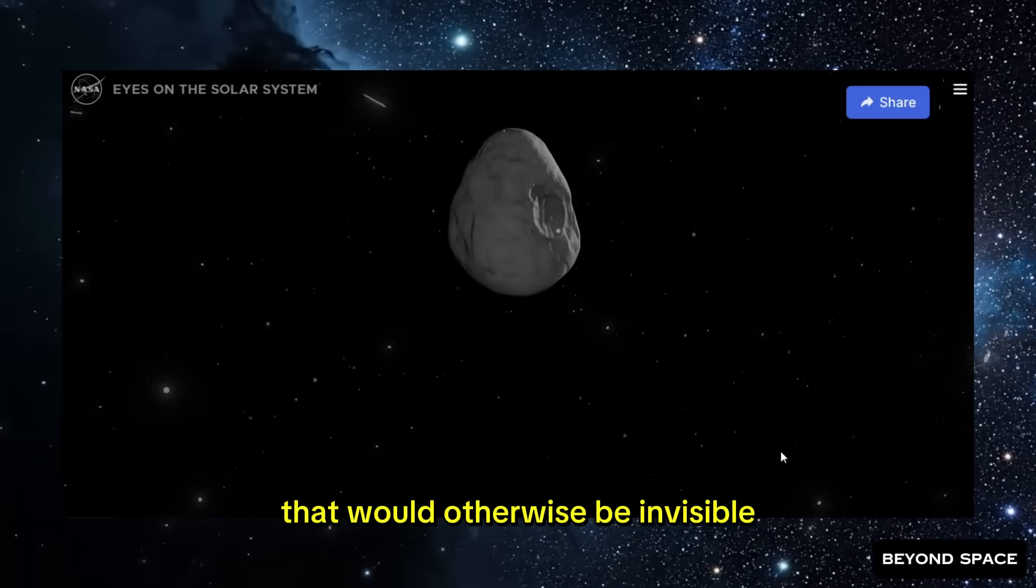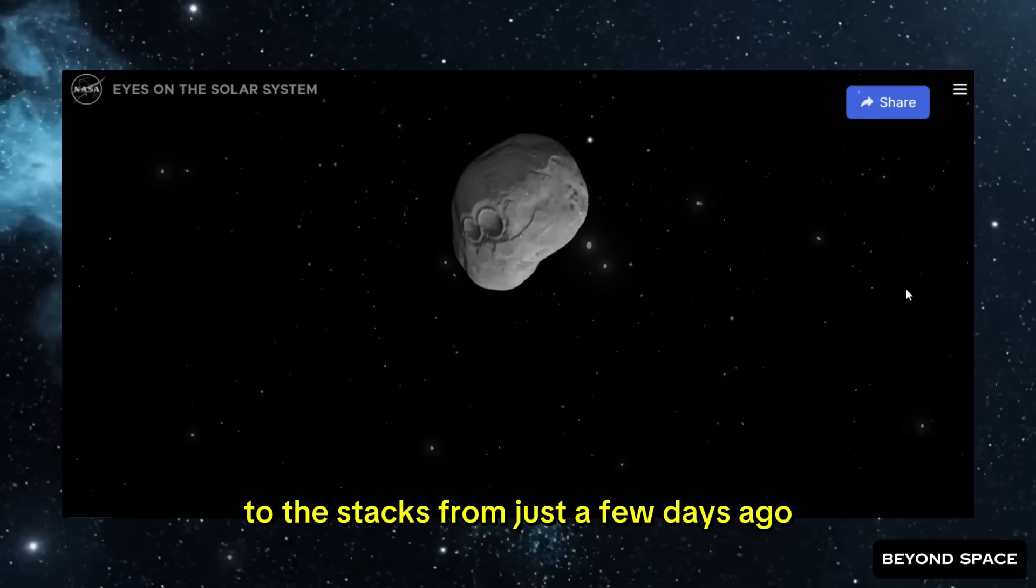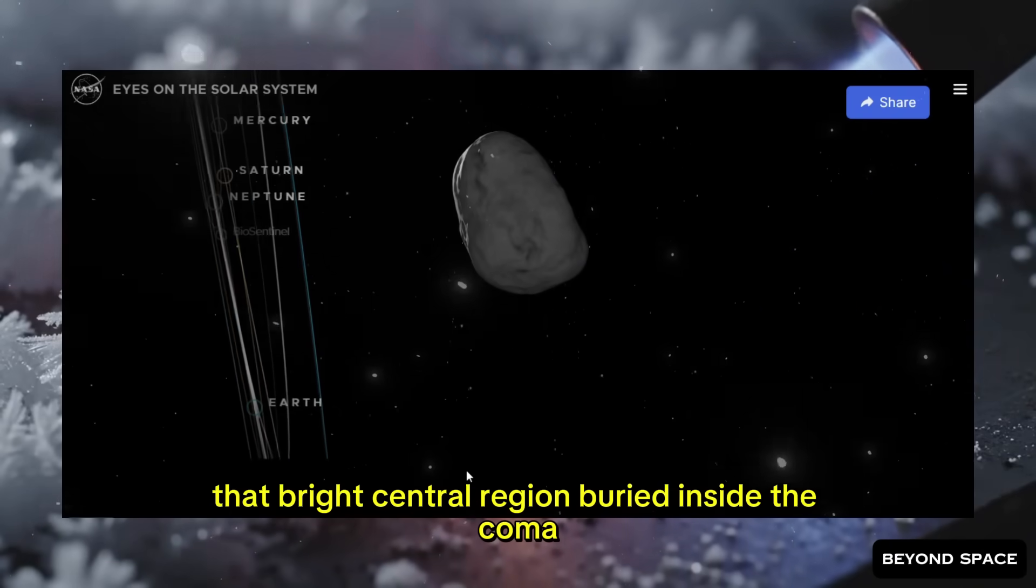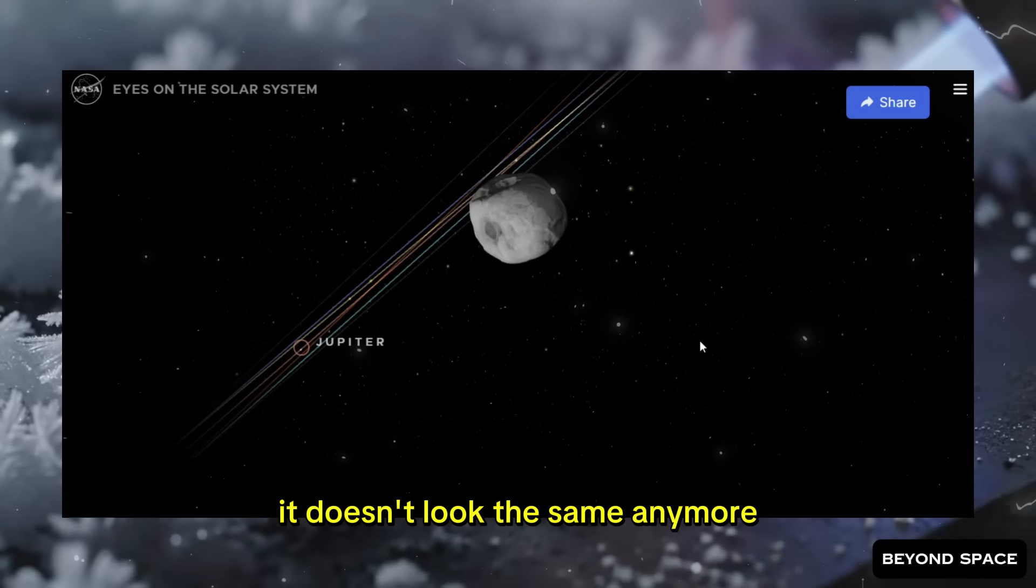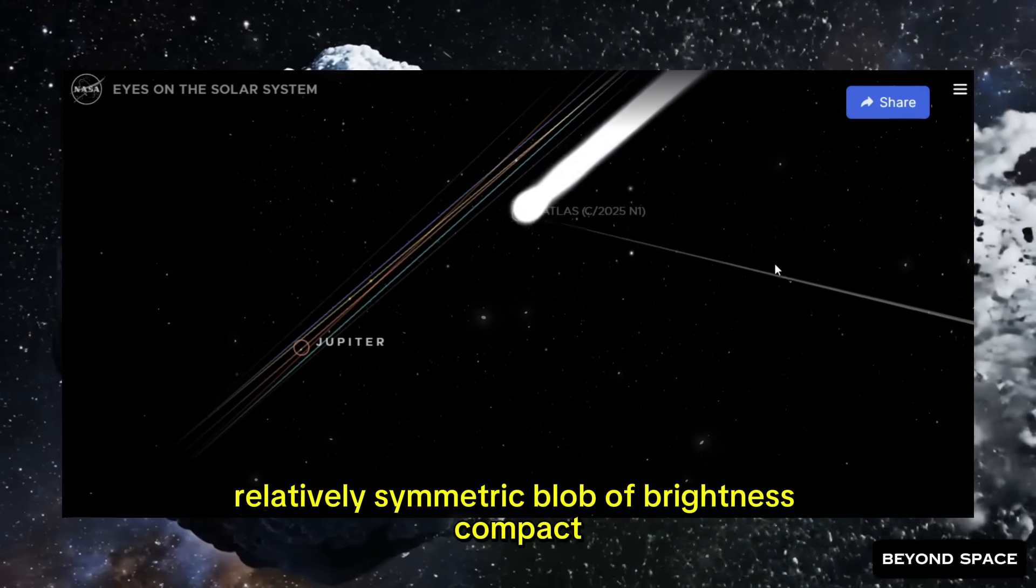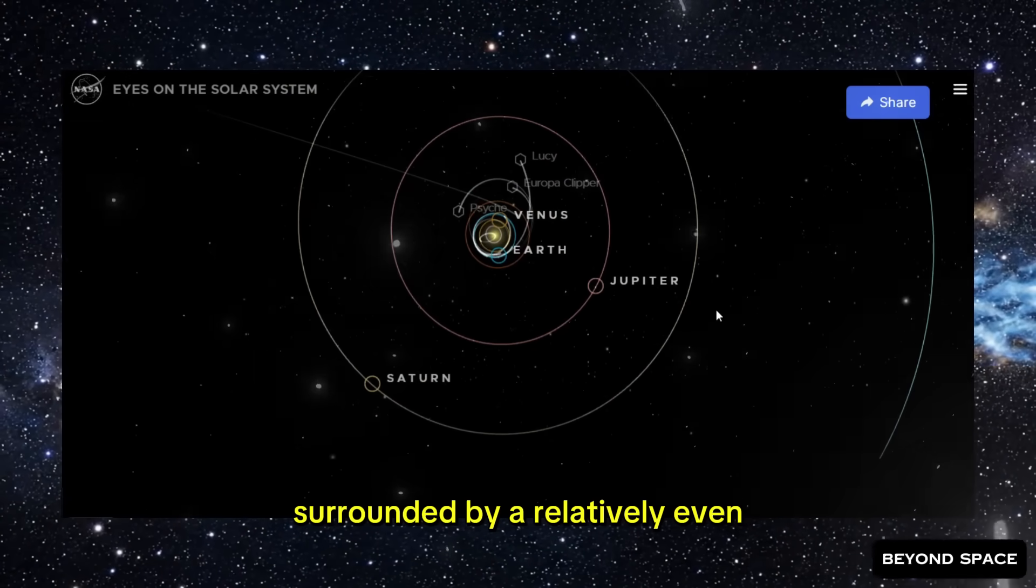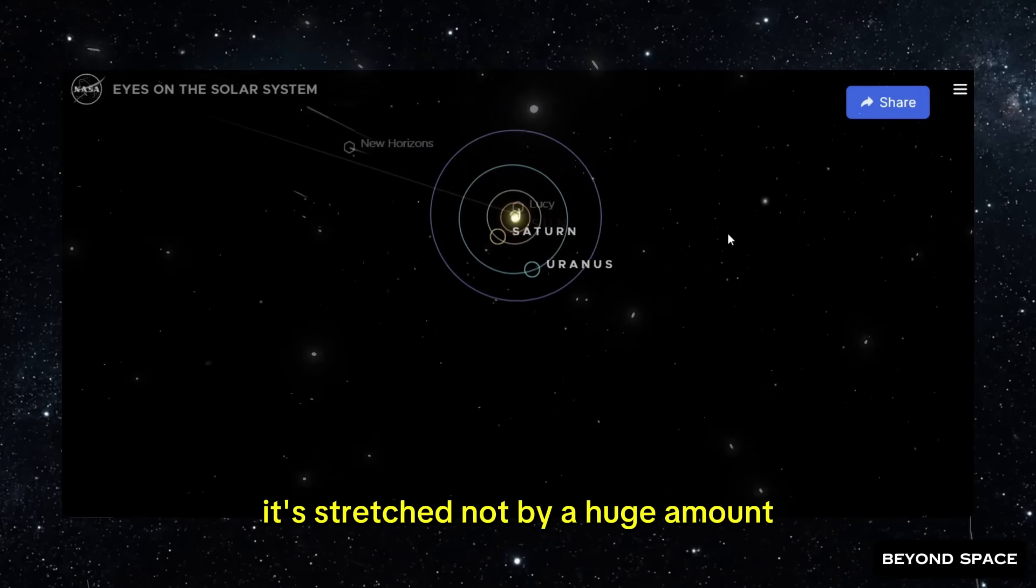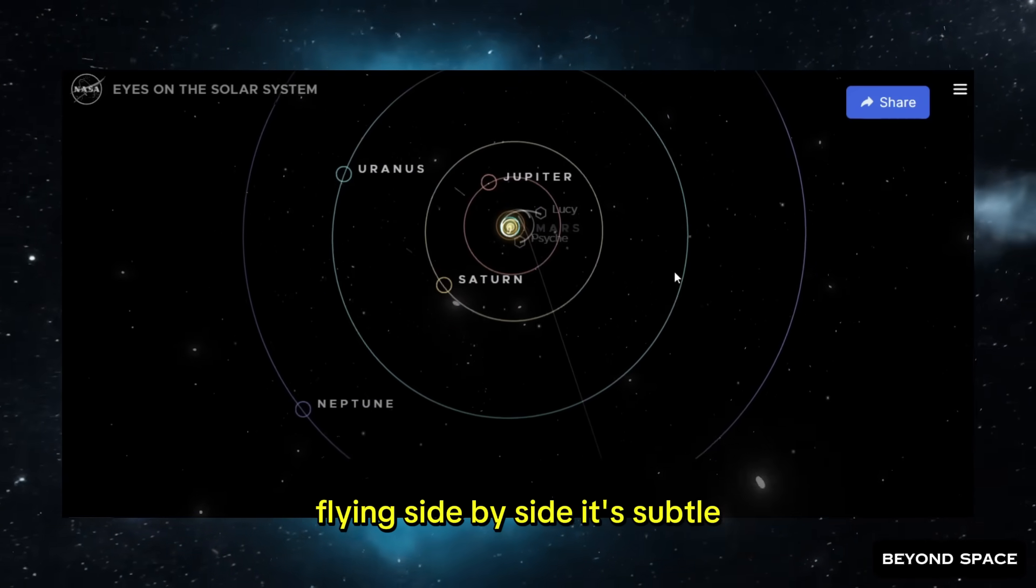When they stacked the newest images and compared them to the stacks from just a few days ago, they saw something that made them stop. The core of 3i Atlas, that bright central region buried inside the coma, the cloud of gas and dust surrounding the nucleus, it doesn't look the same anymore. It used to look like a single, relatively symmetric blob of brightness, compact, centered, exactly what you'd expect from a single nucleus surrounded by a relatively even distribution of material. But now, it's elongated. It's stretched.